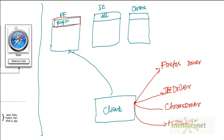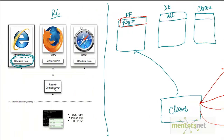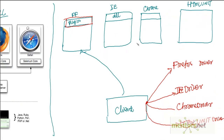HTML Unit is a kind of browser, but it will not show you any graphical user interface. It will do things like send a request to a server and get a response back, but it will not show you anything visually — it is written in Java. Here is a key difference between RC and WebDriver: RC required a Remote Control server acting as a proxy, but that is not required with WebDriver — you can directly drive the browser.